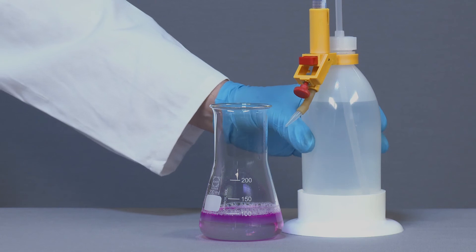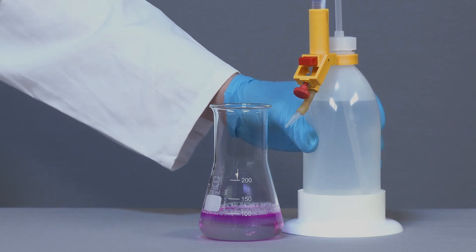The zero point must be adjusted before starting the titration. Firmly squeeze the bottle once and release it when the liquid level is above zero. The zero point is set.